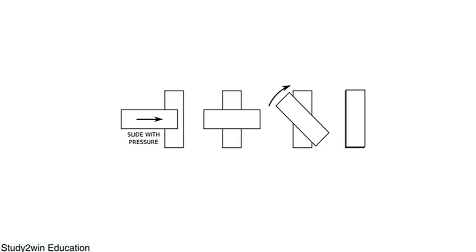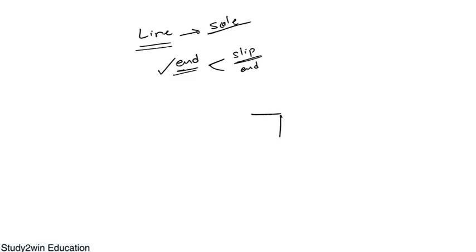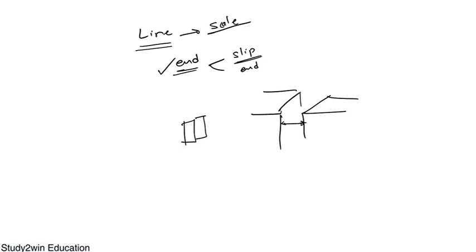Slip gauges are used to find the distance between two surfaces. Suppose these are two surfaces and one has to find the distance between them very accurately. He can make a block of slip gauges and try to insert it in the gap to find the exact distance. He will take one slip gauge and then another, join them by the wringing method, and insert them. If it goes with clearance, he will add one more slip gauge. By trial and error, he will end up with a very close dimension of that particular gap.